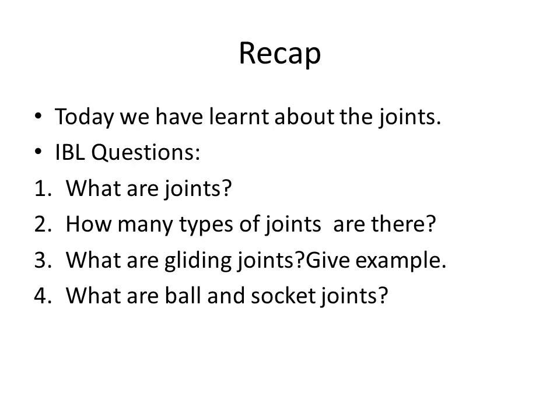So today we discussed: what are joints — a place where two or more bones meet. There are four types of joints: hinge joint, pivot joint, gliding joint, and ball and socket joint. Gliding joints are present in our wrist and ankles.